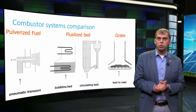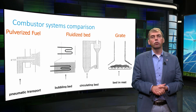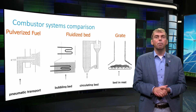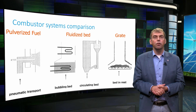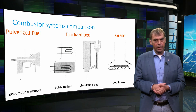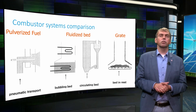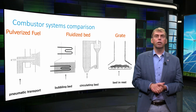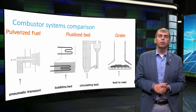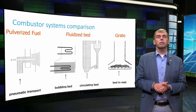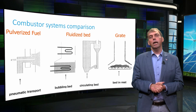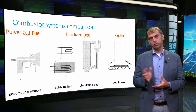One or more cyclones separate the particles from the gas stream and the particles are returned into the main reactor. In the return leg, heat exchangers can be placed to generate steam. Finally, at the right-hand side, you see the fixed bed moving combustor, as mentioned previously.